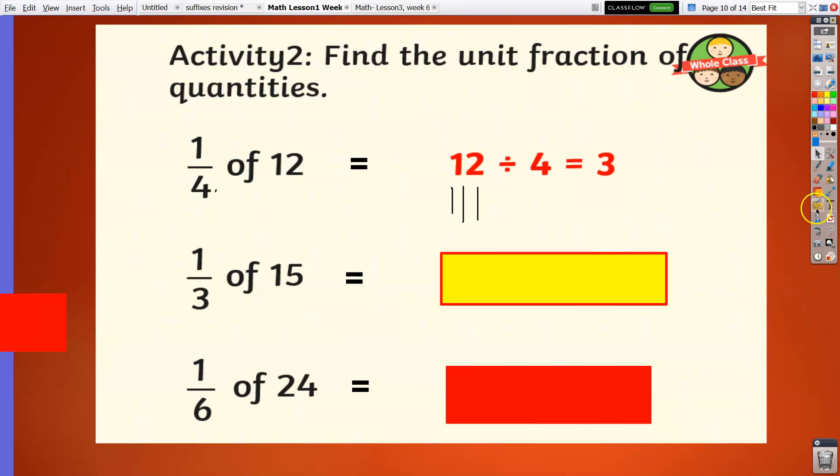One-third of 15. 15 divided by 3 is equal to 5. Also, you may skip count by 3: 3, 6, 9, 12, 15. Now we get 5 as the answer.